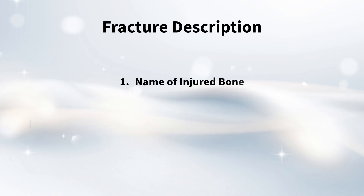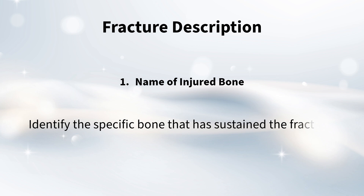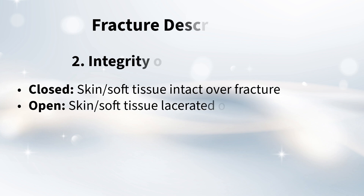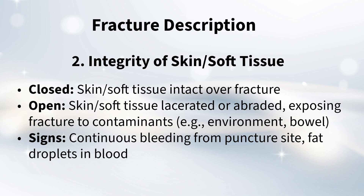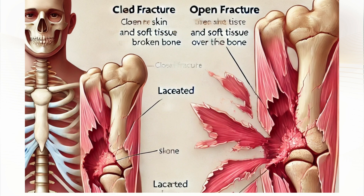That's the starting point — which bone we're talking about. But then it gets into the integrity of skin and soft tissue, and that's where we have this big distinction between a closed fracture and an open fracture. A closed fracture means the skin over the break is still intact, contained within the body. But an open fracture is where things get more serious, because the skin is broken and the fracture site is exposed to the outside world — a really critical distinction because open fractures have a much higher risk of infection.